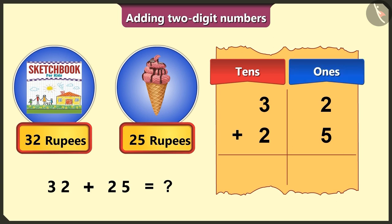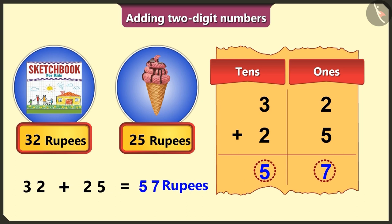Now, in the ones box, 2 and 5 will add up to form 7. In the tens box, 3 and 2 will add up to form 5. So, Aunty, you have to give me a total of 57 rupees.